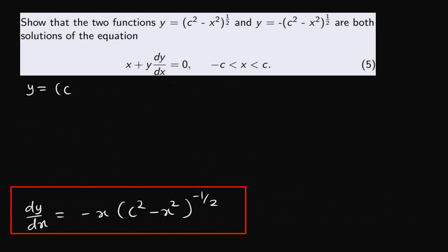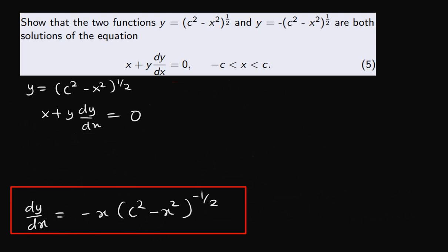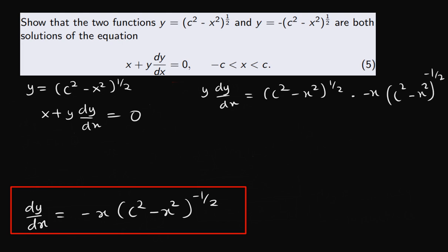We have the actual function y equal to c squared minus x squared to the power of half. Now let's substitute into the differential equation. For the differential equation x plus y dy over dx equals zero, we compute y dy over dx separately. That is c squared minus x squared to the power of half, times minus x multiplying c squared minus x squared to the power of minus half.